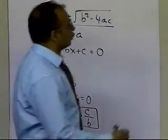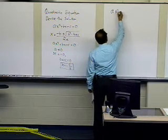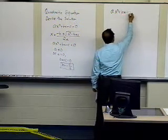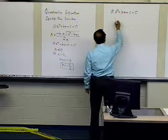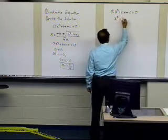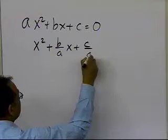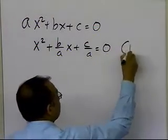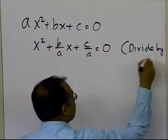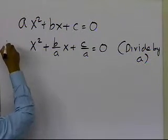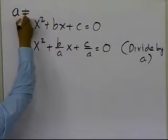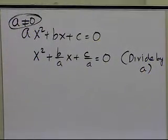So, assuming that a is not equal to 0, we have ax squared plus bx plus c equal to 0. What I'm going to do is divide by a throughout, so I get x squared plus b over a times x plus c over a equal to 0. We obtain this by dividing by a, and since I already assumed that a is not equal to 0, that division is valid, so I get this particular formula.